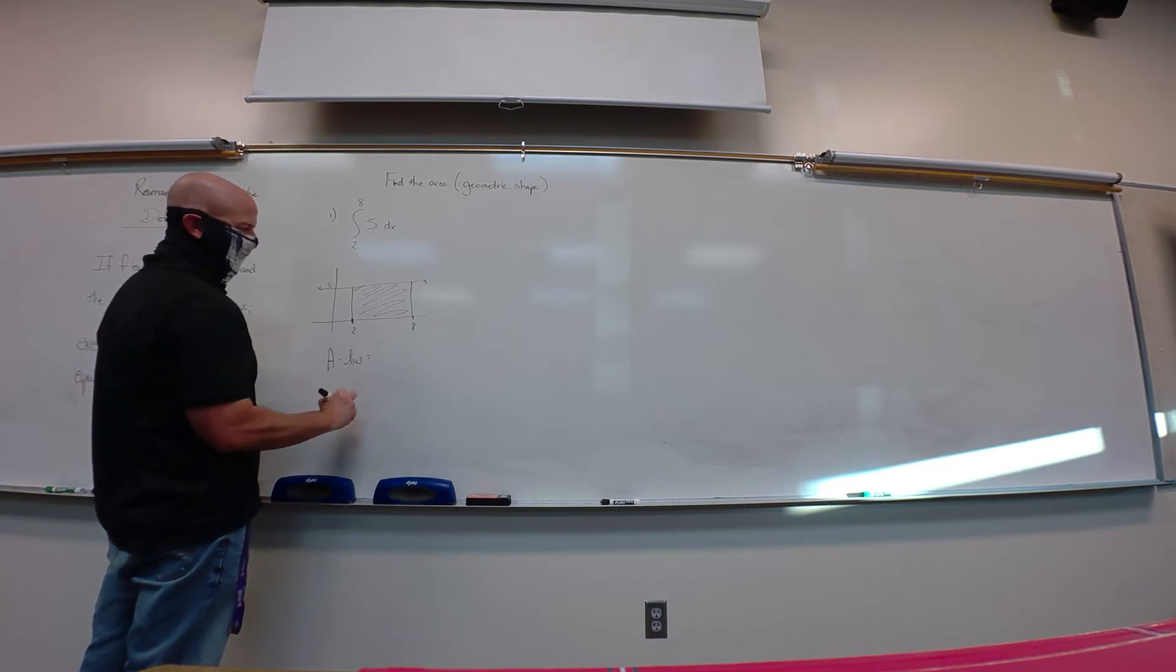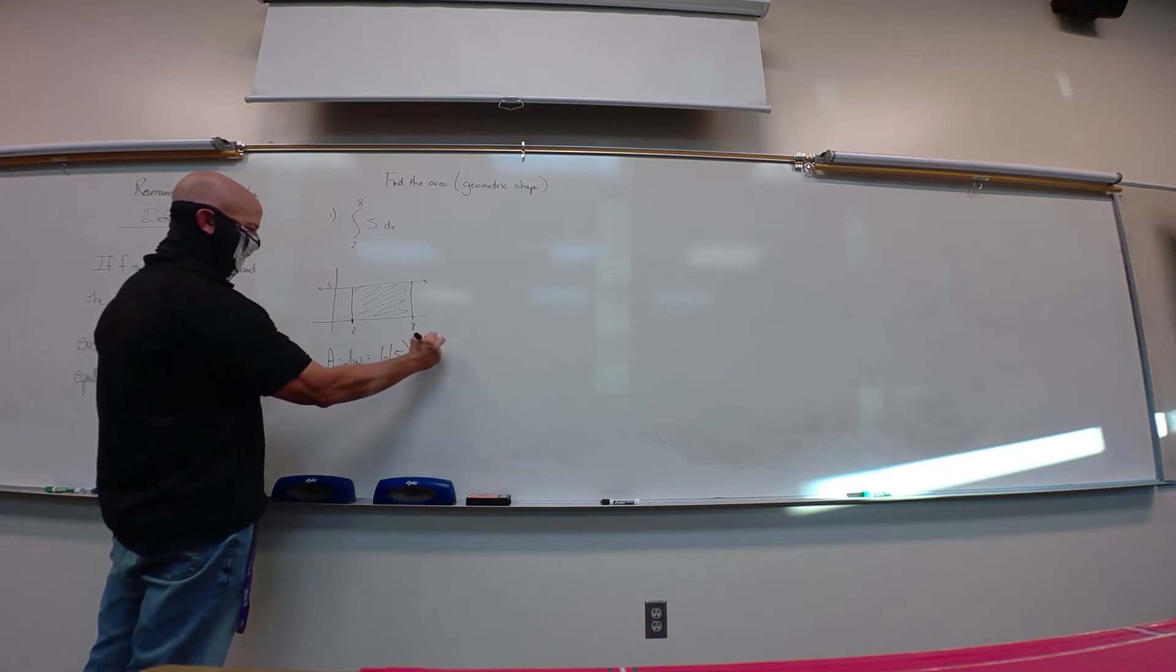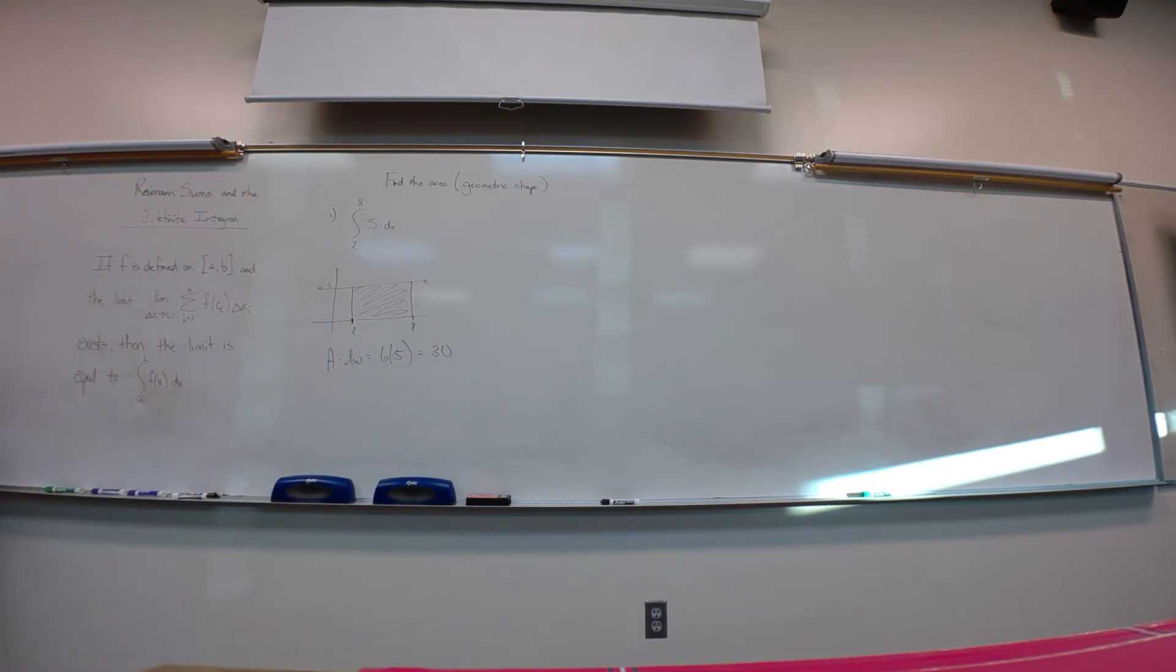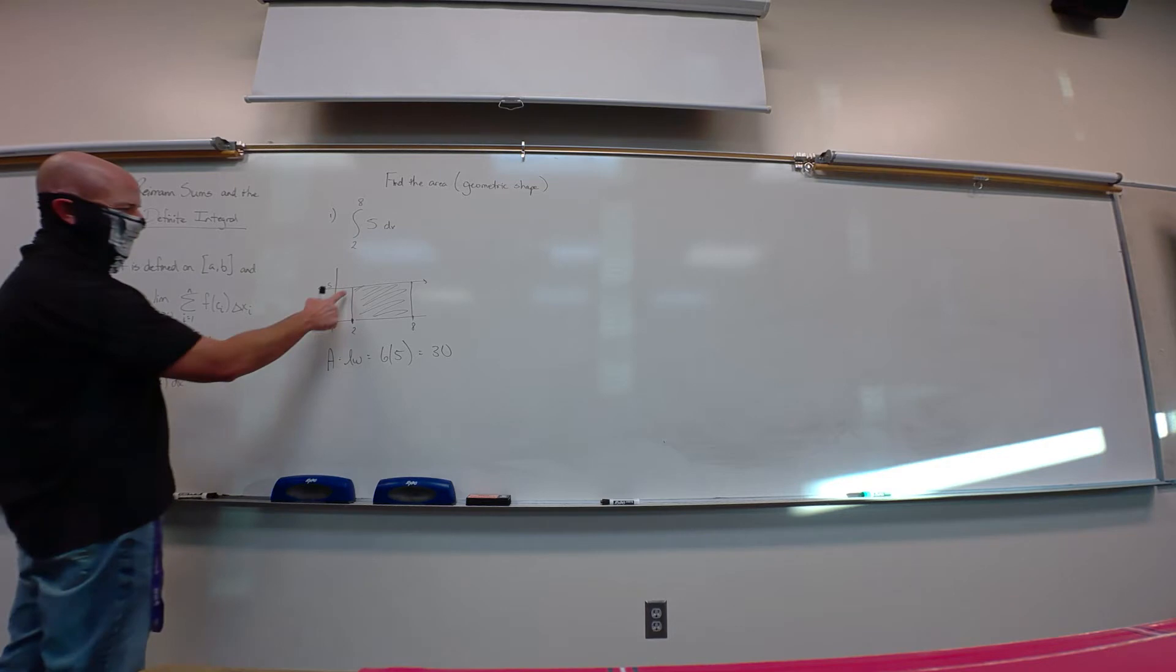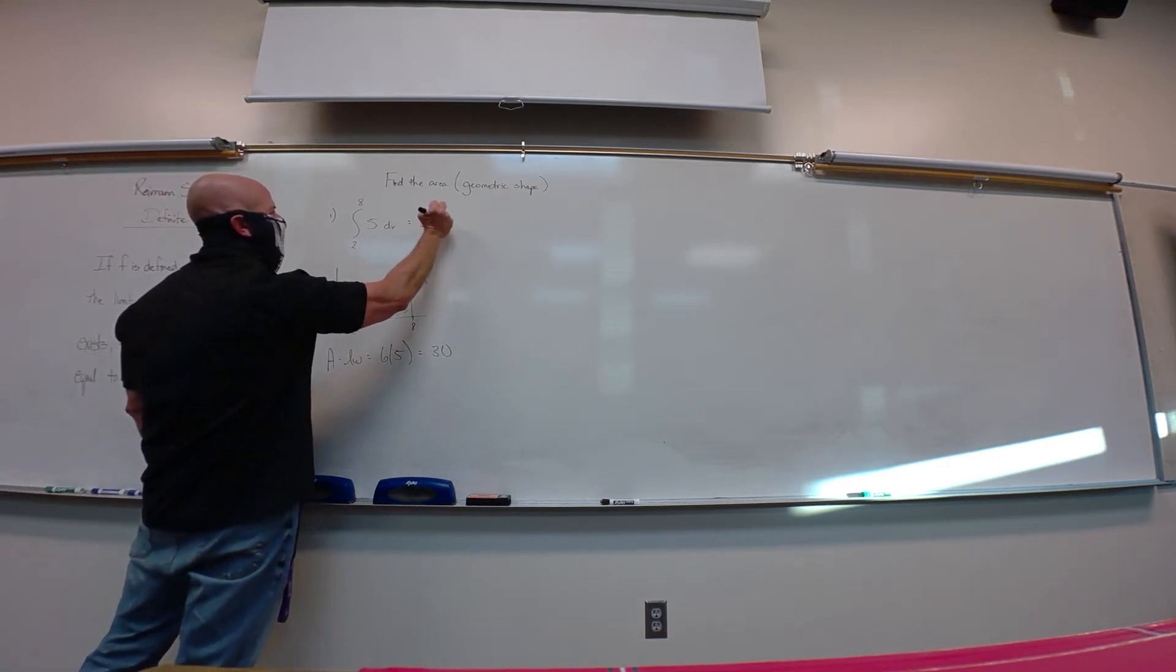Area of a rectangle, length times width. So this would be, what, 6 times 5? 2 to 8 would be 6 units. So that would be that base or length. And that height or length or width would be 5 units right here. So we'd say that this integral equals 30.